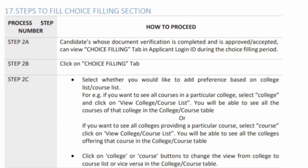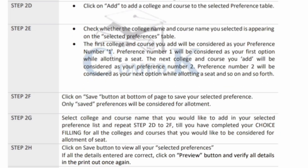For the college-based option, you select RV College of Engineering first — it will show all the courses of RV College and you can enter them. Then next, you select BMS College of Engineering — it will show all the courses and you can add those too. In summary, click on the college or course button to change the view as required. That is Step 2C explained in detail.